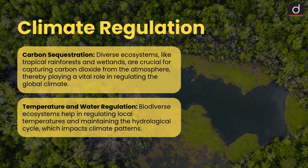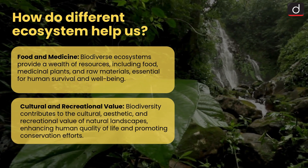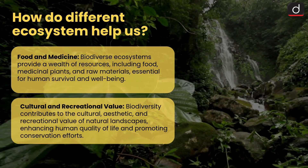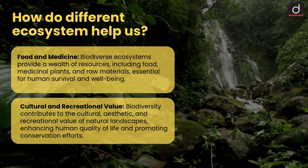Carbon sequestration: diverse ecosystems like tropical rainforests and wetlands are crucial for capturing carbon dioxide from the atmosphere, thereby playing a vital role in regulating the global climate. Temperature and water regulation: biodiverse ecosystems help in regulating local temperatures and maintaining the hydrological cycle, which impacts climate patterns. Food and medicine: biodiverse ecosystems provide a wealth of resources, including food, medicinal plants, and raw materials, essential for human survival and well-being.